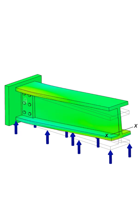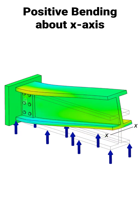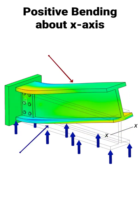In this case, we call this positive bending, and positive bending means that the top flange is going to be in compression and the bottom flange is going to be in tension.